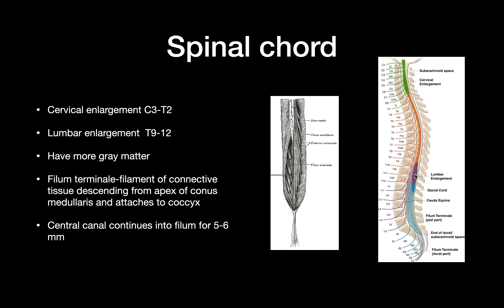The filum terminale is the final part of the spinal cord. It's a filament made out of connective tissue descending from the apex of the conus medullaris, and it attaches to the coccyx. The central canal extends into the filum for only 5 to 6 millimeters, so not very much at all.